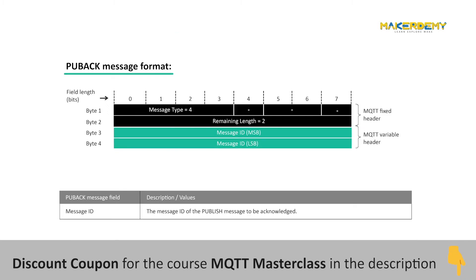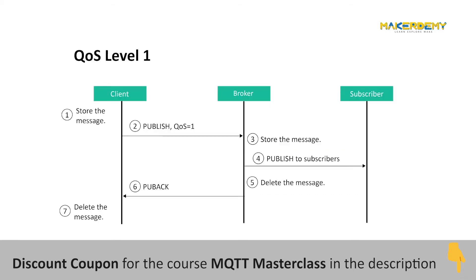The fourth packet is the PUBACK packet. The PUBACK packet is an acknowledgement packet sent by the broker to the publisher only when the publisher publishes a message with QoS level 1. QoS level 1 guarantees that the message is delivered at least one time to the receiver. It doesn't have any payload.